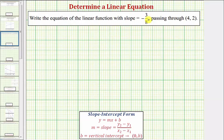So notice in this case, we're told the slope equals negative three-eighths, so we know m equals negative three-eighths. And we're also told the line passes through the point four comma two. Now it's important to recognize here, four comma two is not the vertical intercept, because the x-coordinate is not zero.